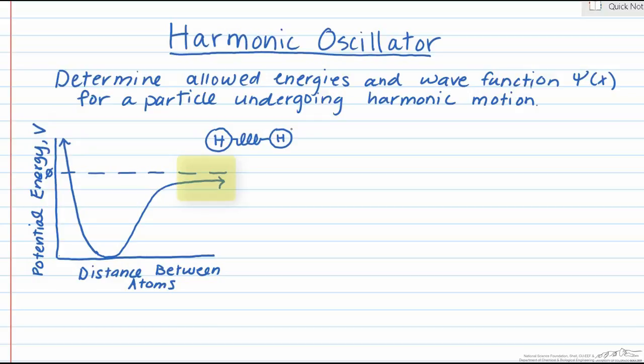At very large distances, we can see the potential energy approach zero because the two H atoms are no longer interacting. For this discussion, we're going to focus on the equilibrium distance where potential energy reaches a minimum and our two atoms are covalently bonded.